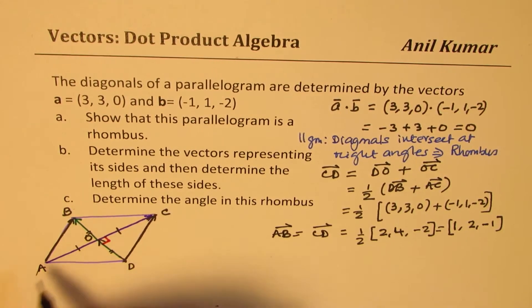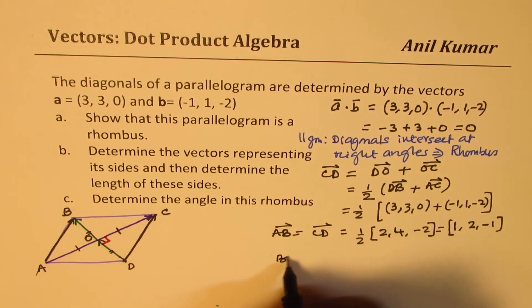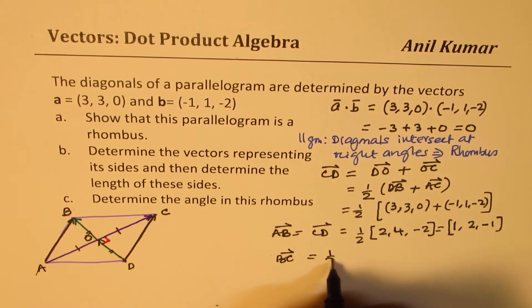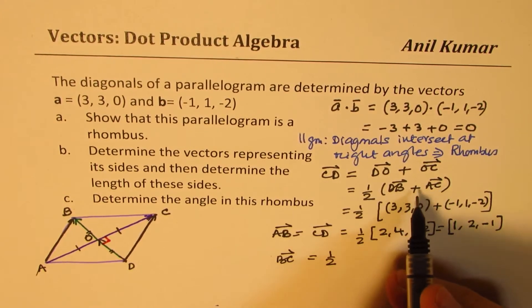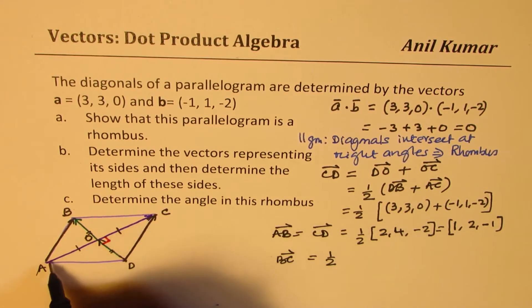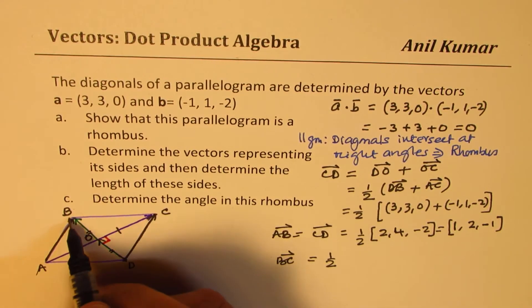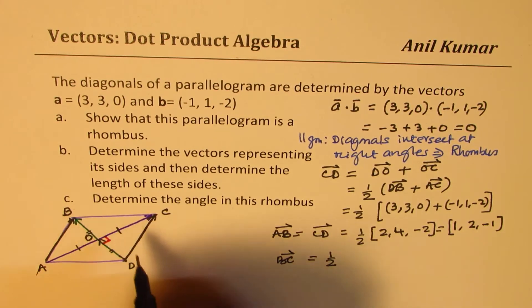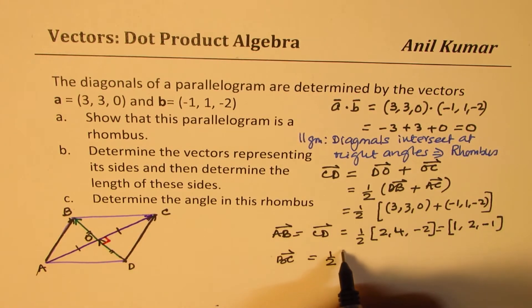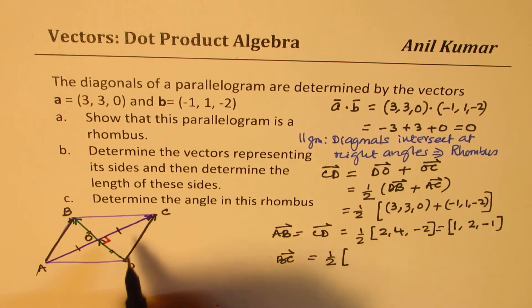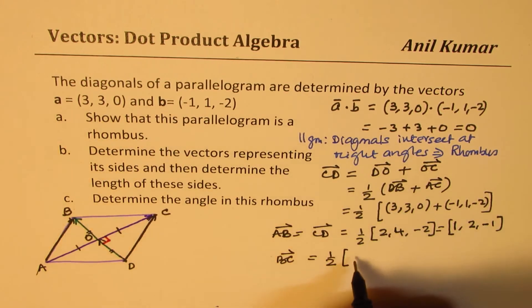Okay. The other vector, which is, let's say, B, C. B, C will be half of difference of these two. So it is because this is like A, this is minus B. These are the two diagonals. So it is half of vector A minus vector B.